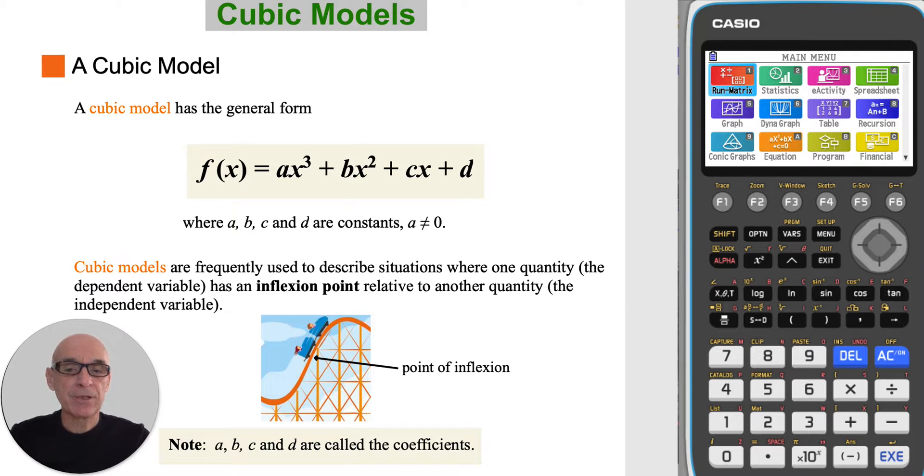Cubic models are frequently used to describe situations where one quantity, the dependent variable, has an inflection point relative to another quantity, the independent variable.